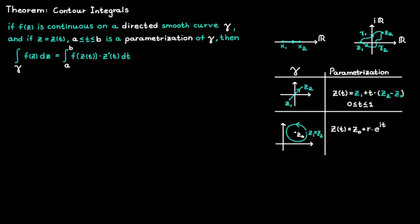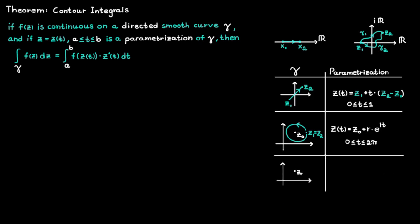For a full lap around the circle, t goes from 0 to 2pi. But if you only want to go half a lap around the circle, you need to change the upper bound limit for t to pi instead of 2pi.